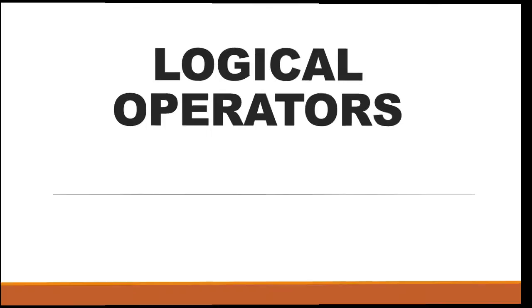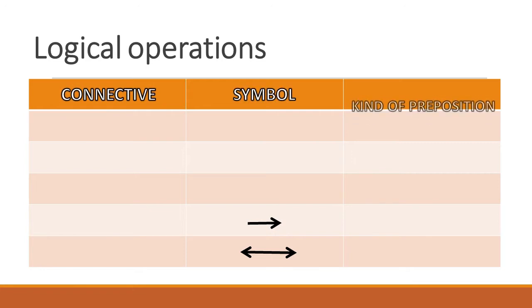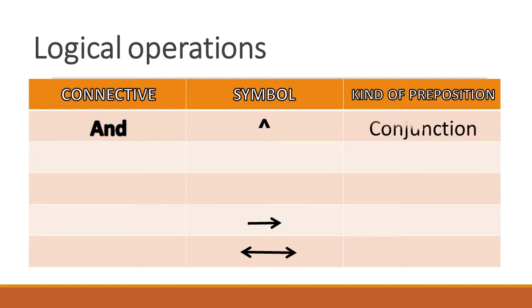Logical operators. The connective AND uses a caret symbol and it is a conjunction, while the connective OR uses a small letter V and it is a disjunction.